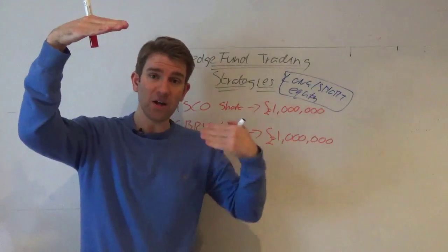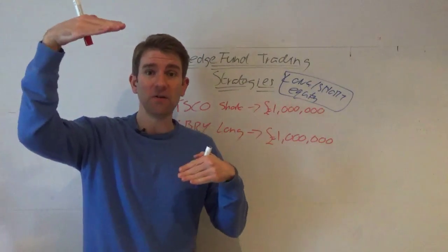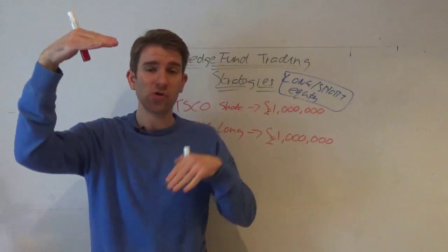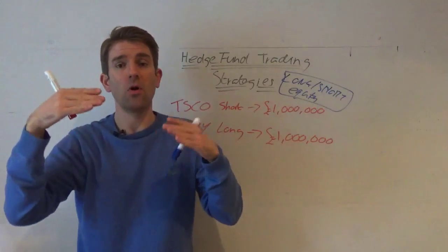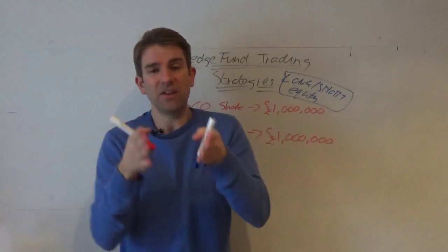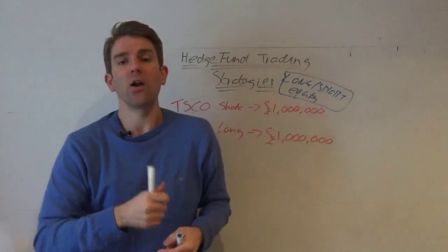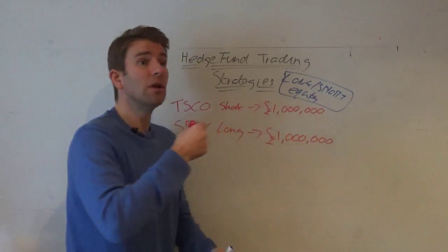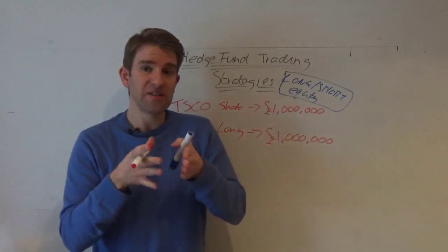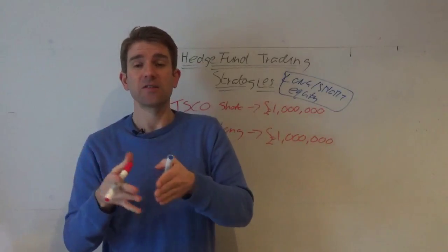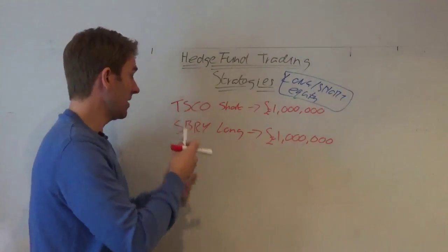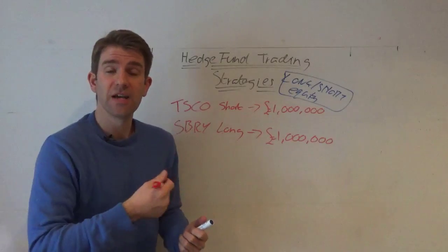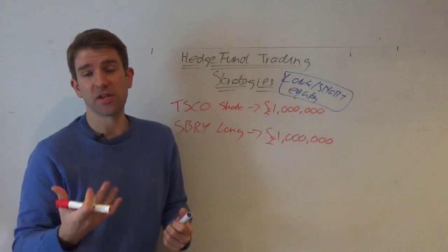You're shorting the overvalued, you're buying the undervalued. Assuming they're both going to come back to a mean, you make money on the short and you make money on the long. That's in theory what they are looking for. Now, often they will look for trades in specific sectors. For example, I've got here a supermarket sector in the UK — you've got Tesco's and you've got Sainsbury's.